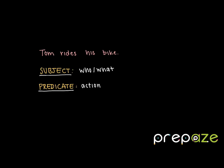So let's look at this sentence: Tom rides his bike. First, I want to determine what the action is. Looking at the sentence, I can see that the action is the word 'rides.' Tom rides his bike — that's what he's doing. So in this case, I would say that 'rides' is my predicate.